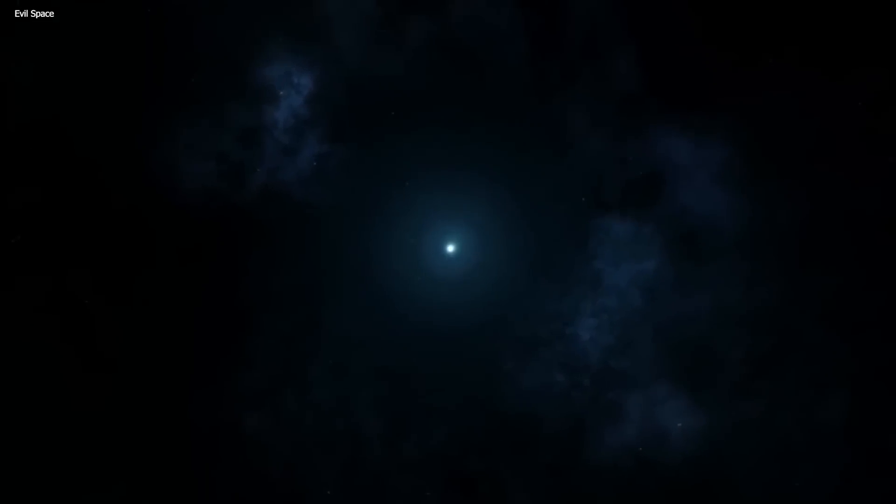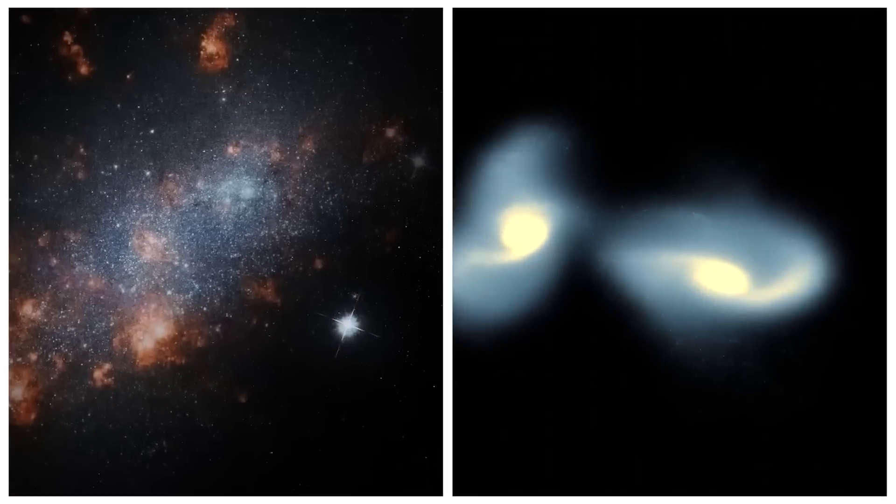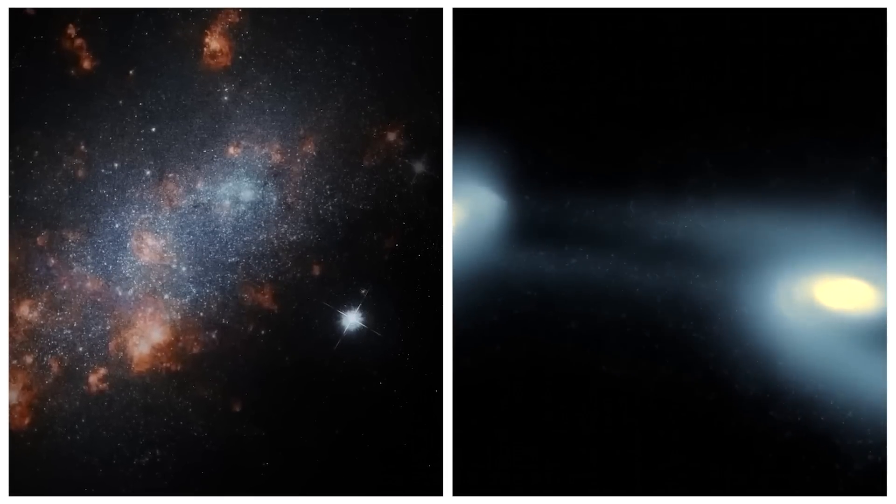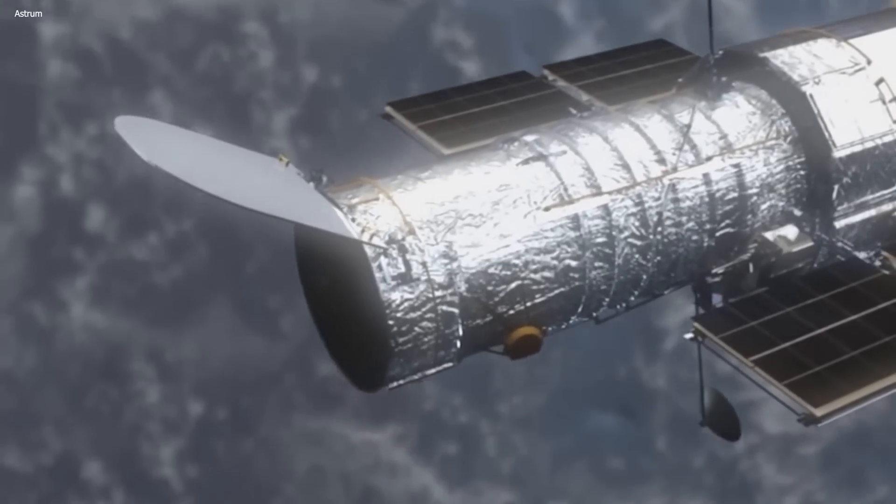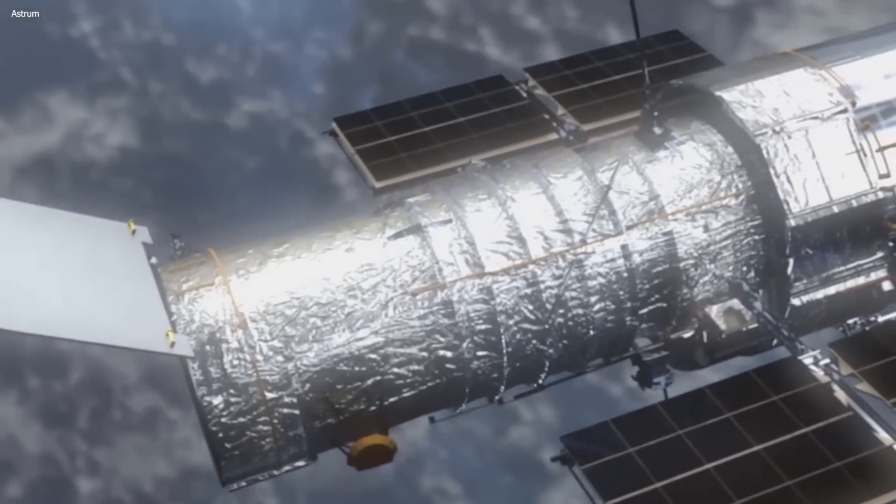Bill Nye explains that a deep field image allows us to peer into the vastness of space between visible stars, capturing distant and faint stars and galaxies. The Hubble Space Telescope gave us its own famous deep field images while orbiting close to Earth.